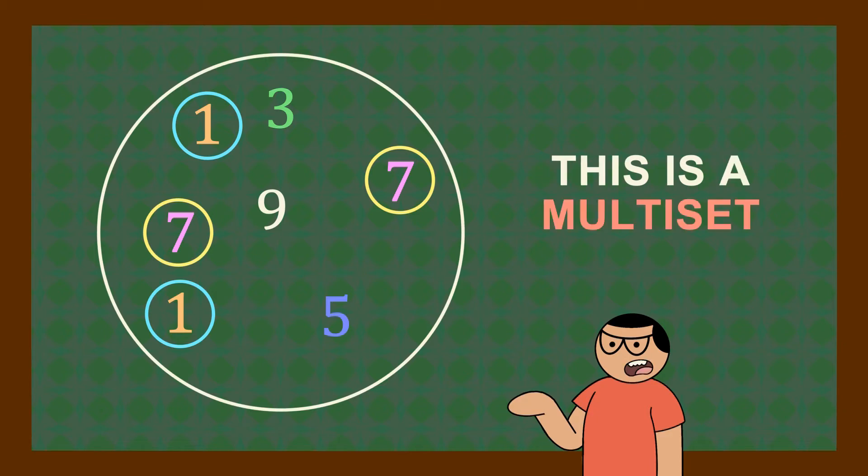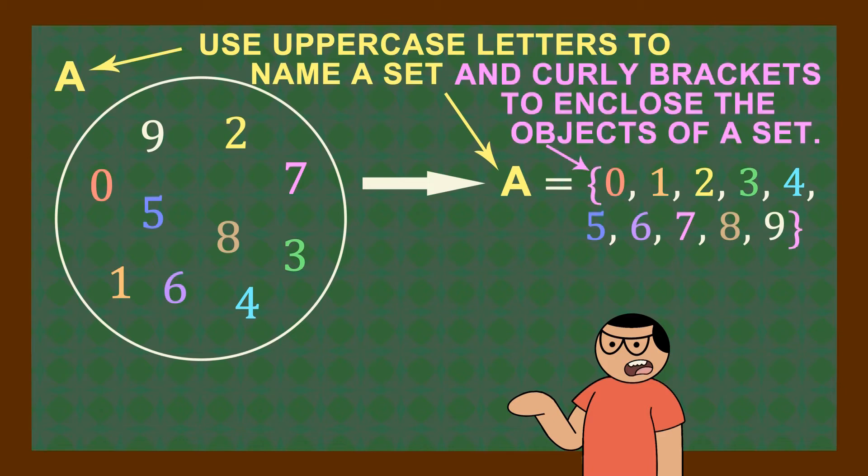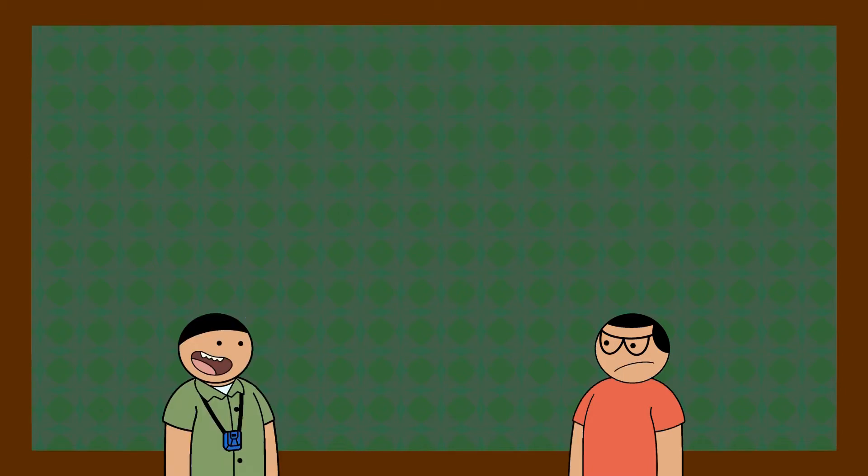This is a multi-set. In writing a set, uppercase letters are used in naming a set. Curly brackets are used to enclose the objects of a set. Hold up, I'm just thinking, should we include puns or jokes in this episode to make it less boring?